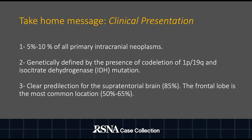Oligodendrogliomas represent 5 to 10 percent of all primary intracranial neoplasms. According to the last WHO classification, they are defined by the presence of 1p19q codeletion and IDH mutation. The majority of them are supratentorial tumors, with the frontal lobe being the most common location.